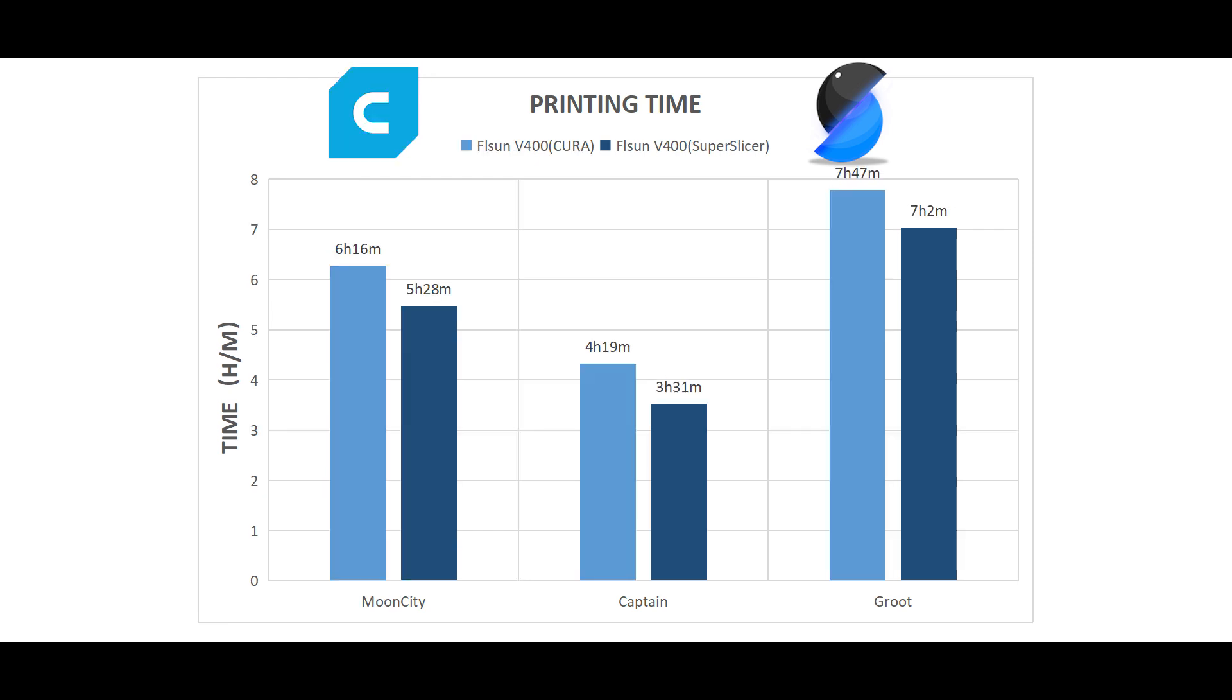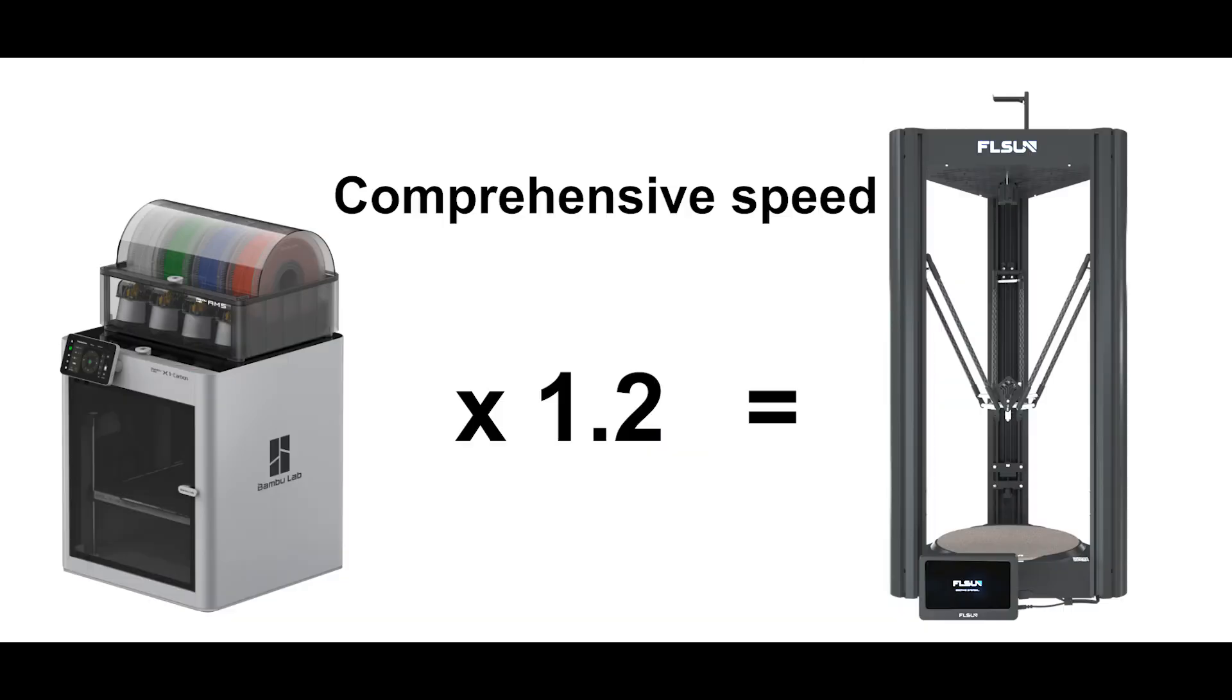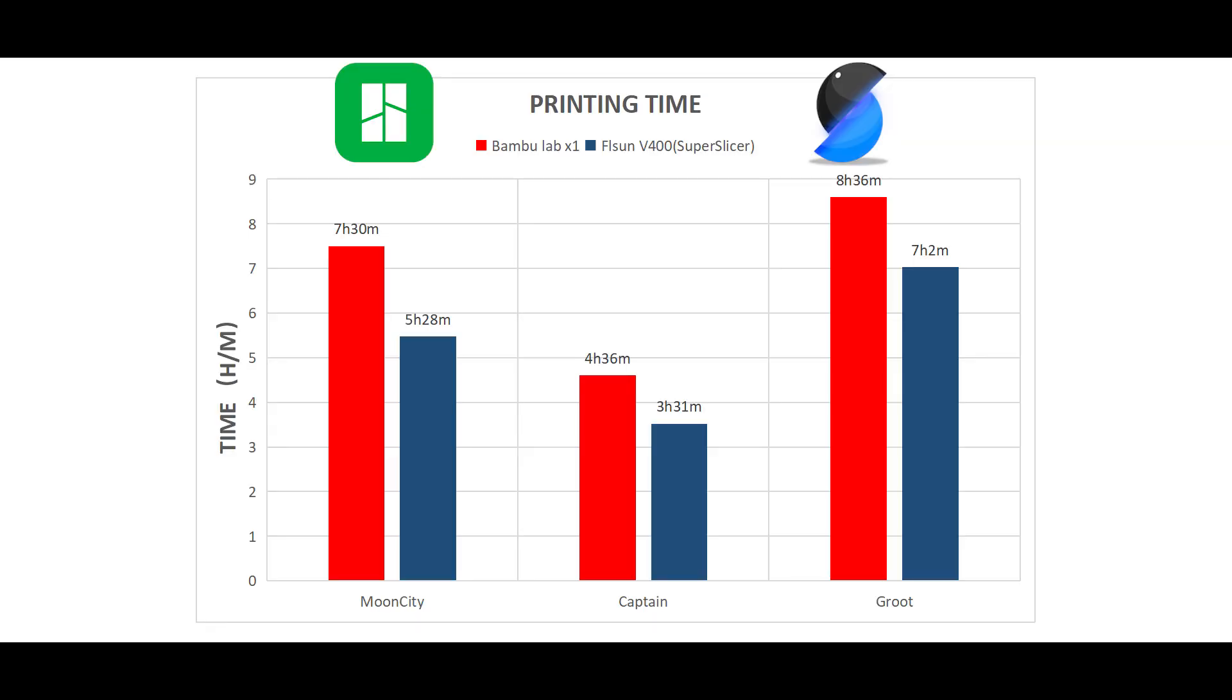As you can see, Cura does not really take advantage of the V400, and in terms of time, the V400 is about 1.2 times faster than the Bamboo in the case of a smaller slice difference.